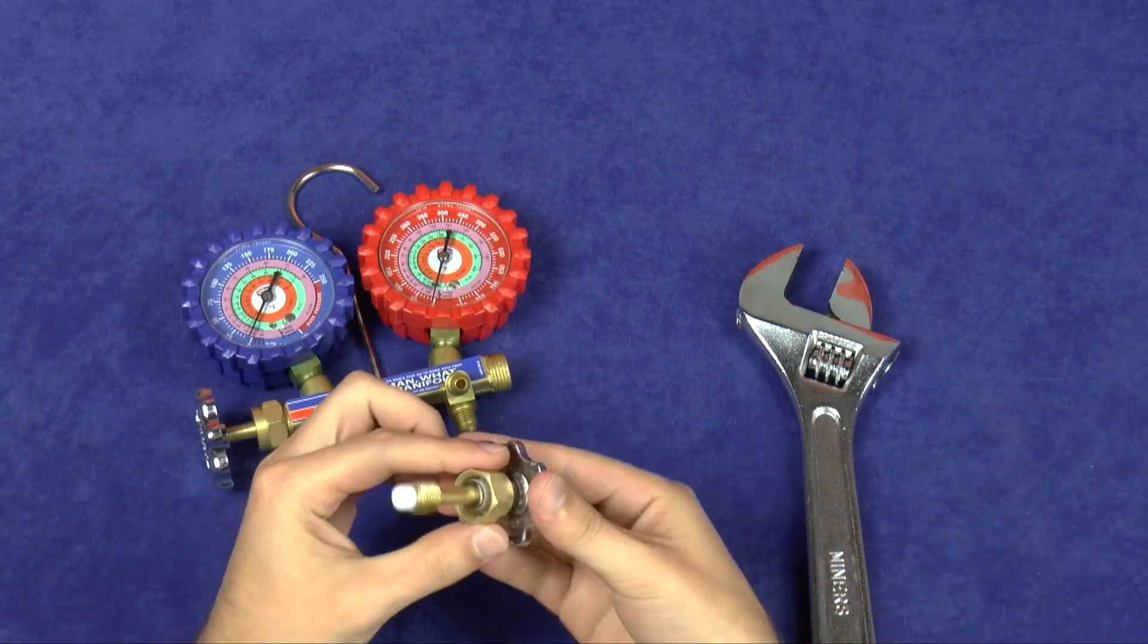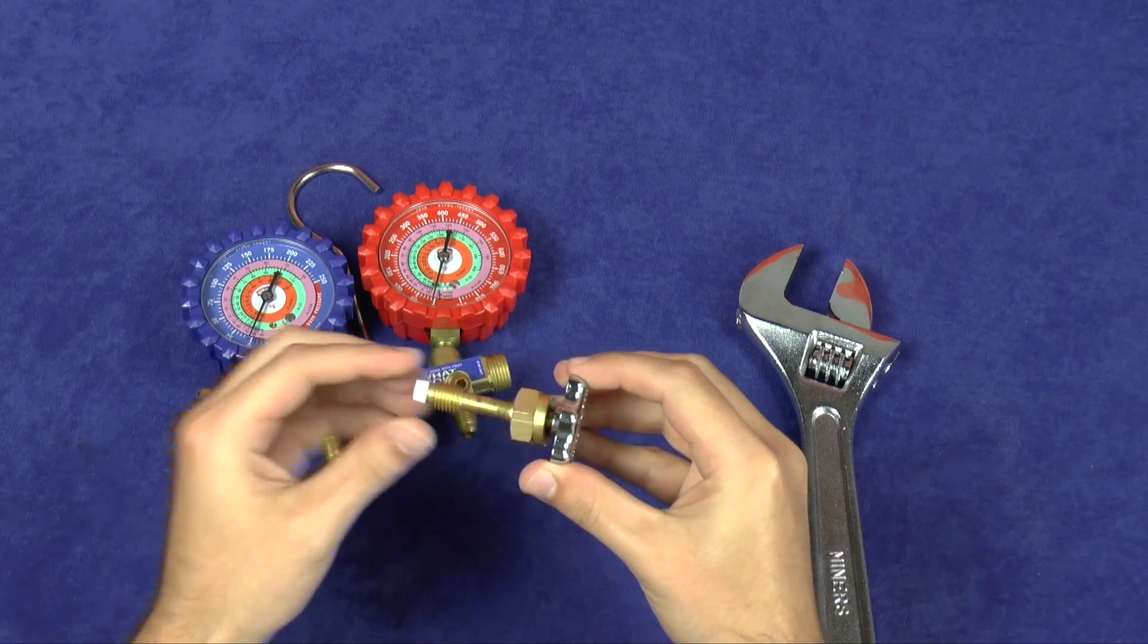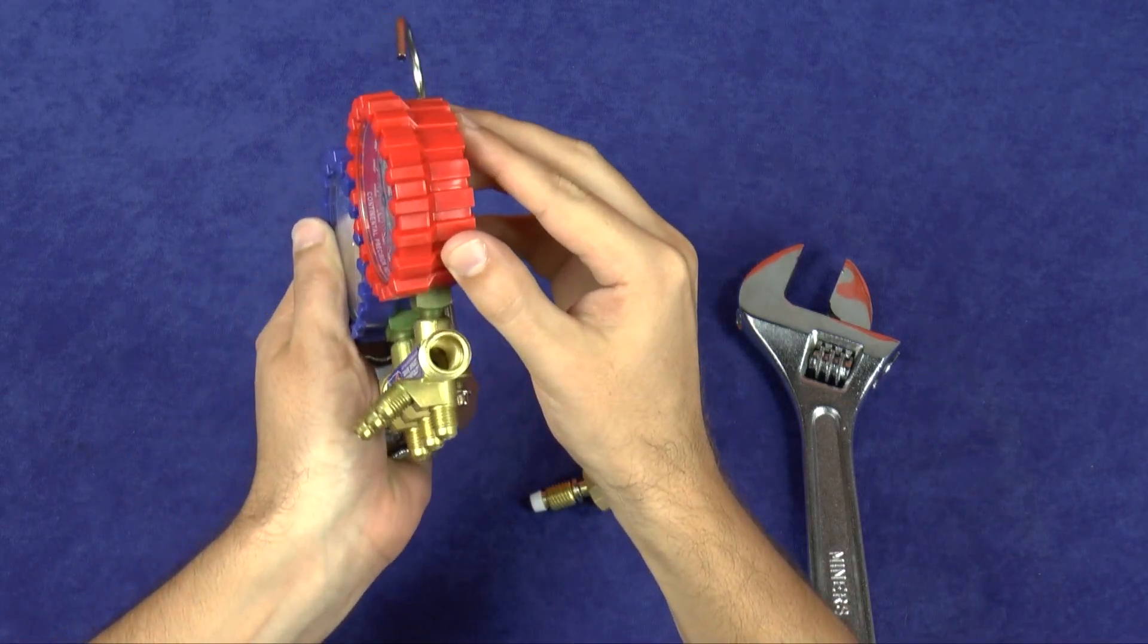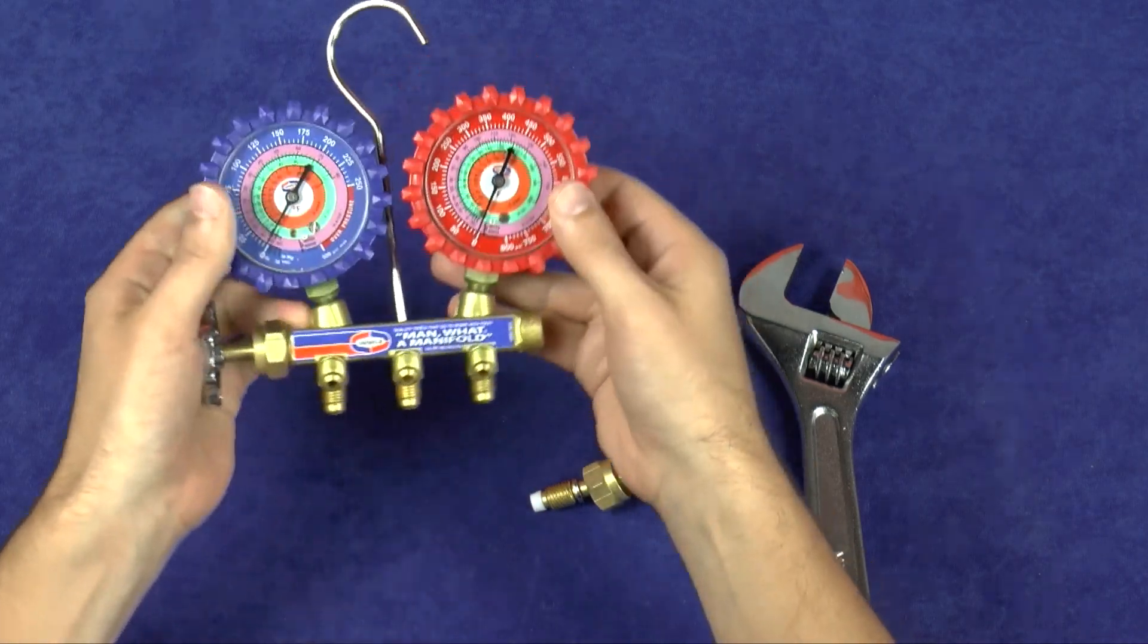If any foreign debris has found its way inside, it can score the Teflon and prevent it from sealing properly. Once the manifold and valve stem assembly are clear of foreign debris,